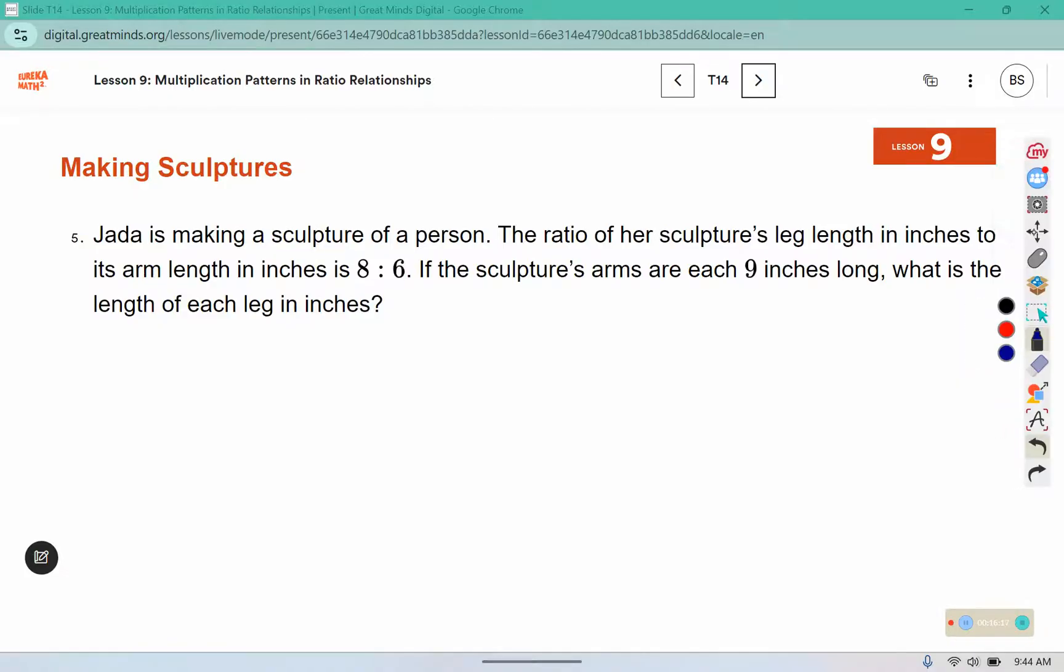Jada is making a sculpture of a person. The ratio of her sculpture leg length in inches to its arm length in inches is 8 to 6. I'm going to write that down, leg and arm 8 to 6. If the sculpture's arms are each 9 inches long, what is the length of each leg in inches?